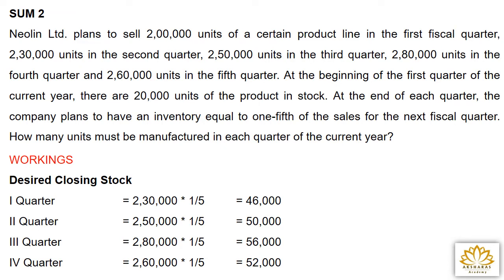Sum 2: New Orleans Limited plans to sell 2,00,000 units in the 1st fiscal quarter; 2,30,000 units in the 2nd quarter; 2,50,000 units in the 3rd quarter; 2,80,000 units in the 4th quarter; and 2,60,000 units in the 5th quarter. At the beginning of the 1st quarter, there are 20,000 units in stock. At the end of each quarter, the company plans to have an inventory equal to 1/5th of the sales for the next fiscal quarter. How many units must be manufactured in each quarter?